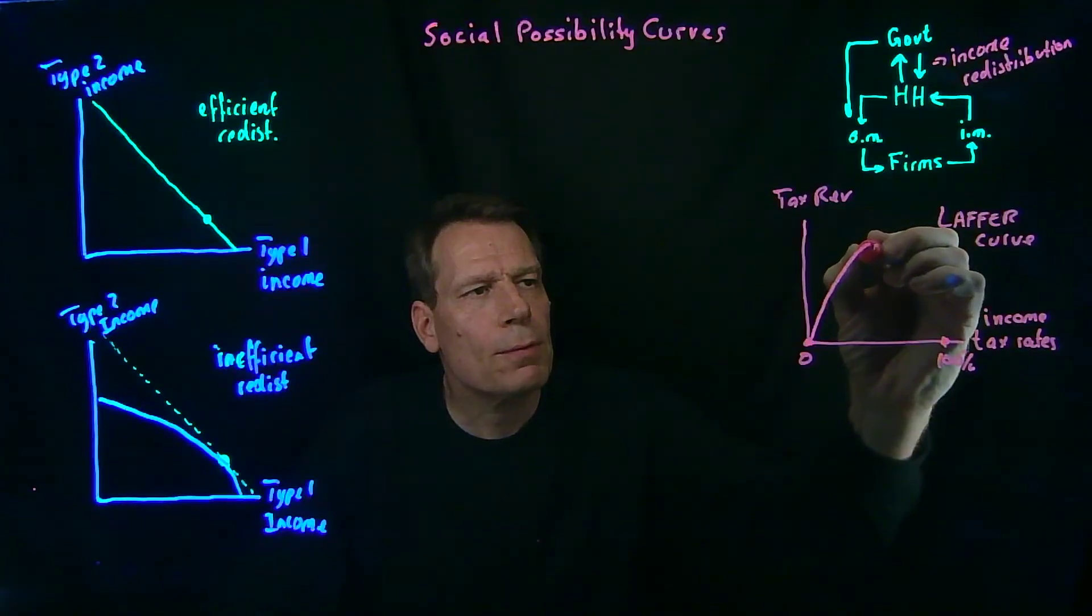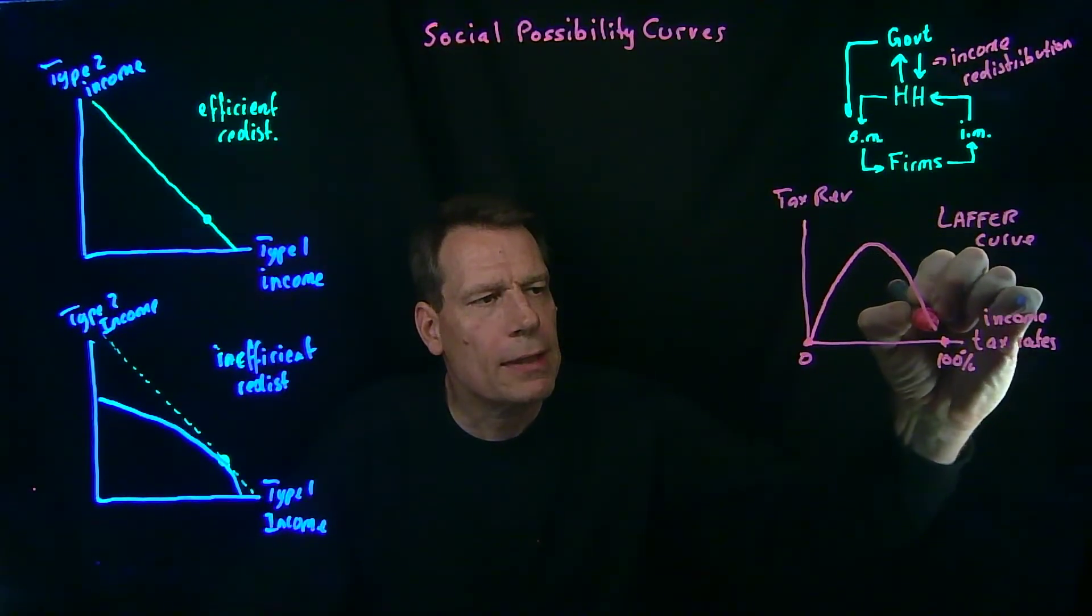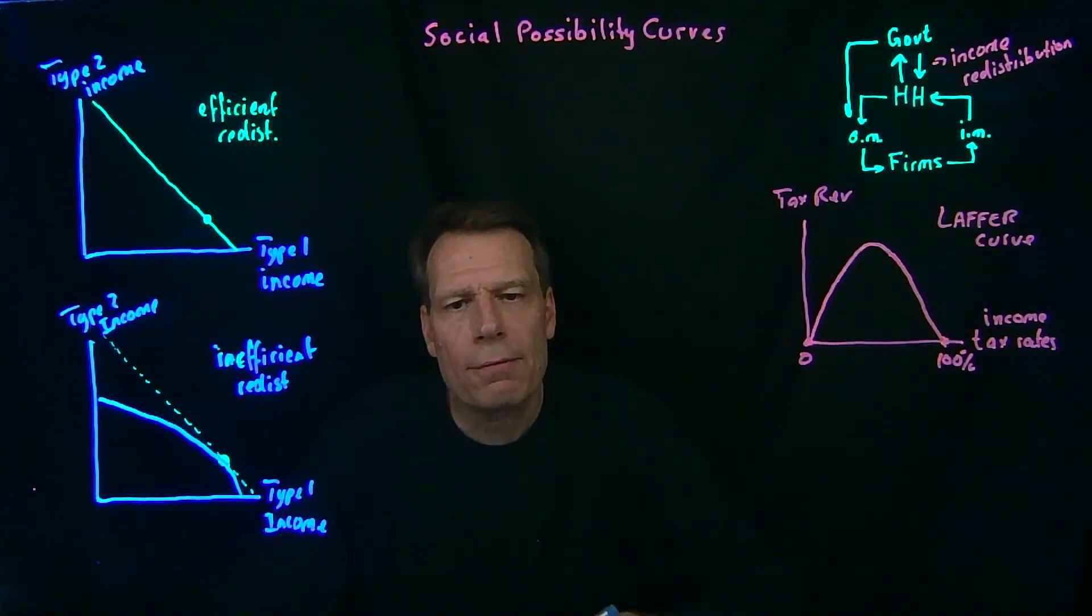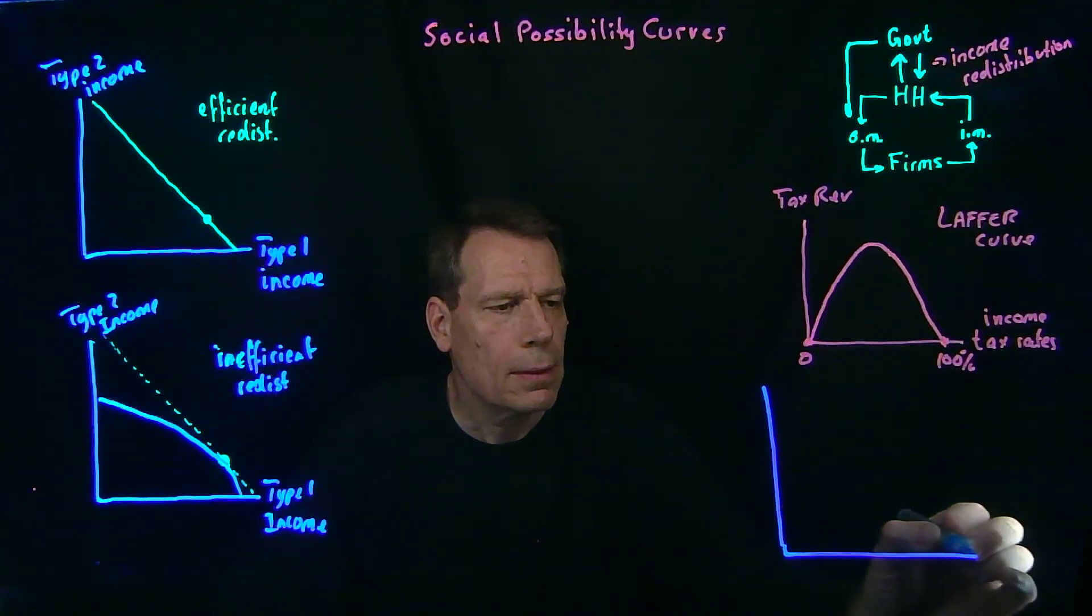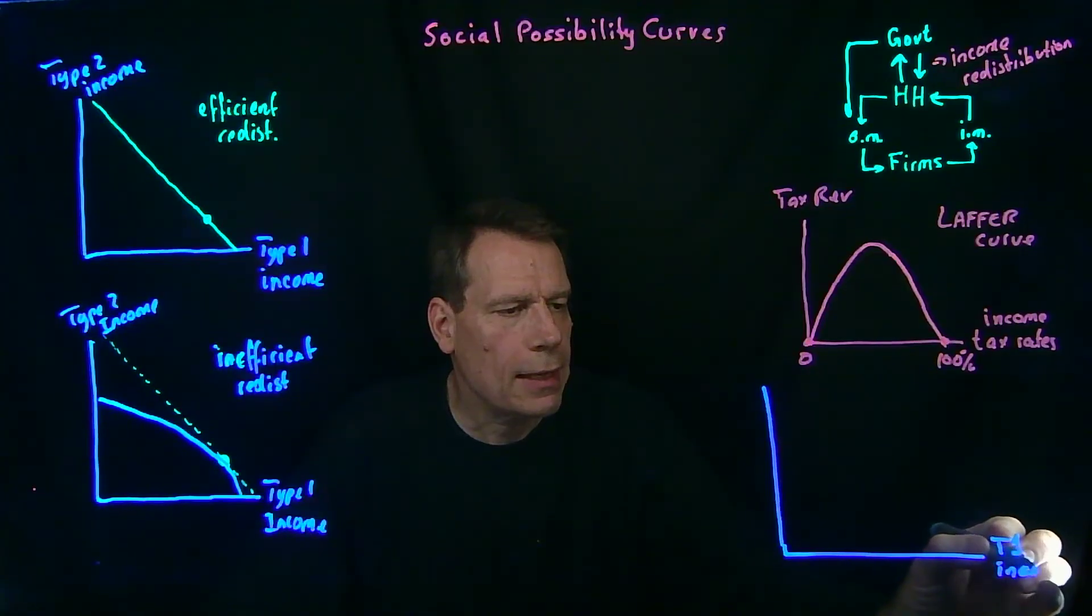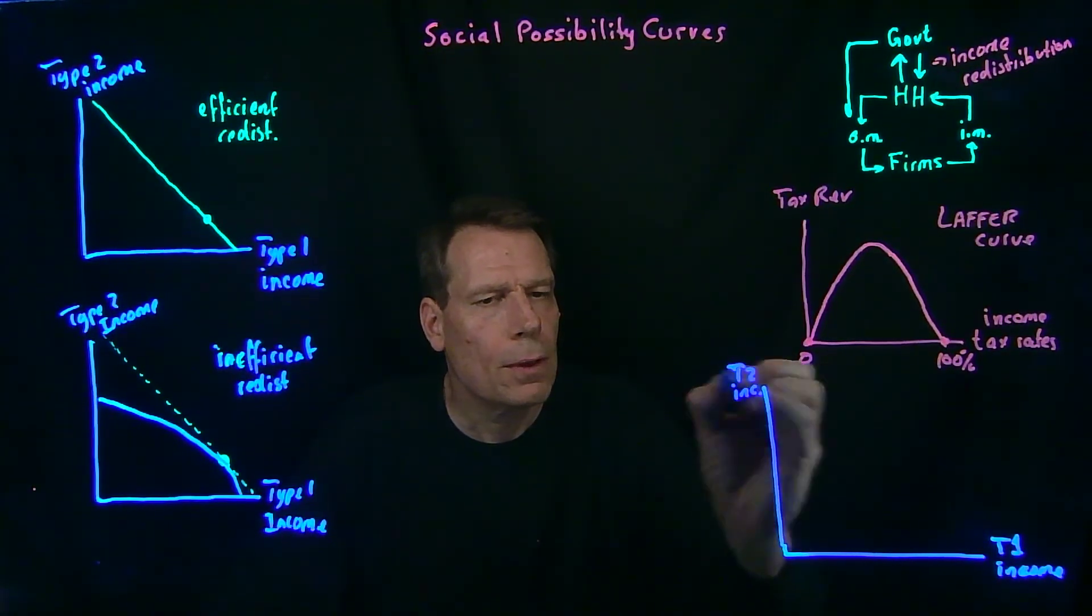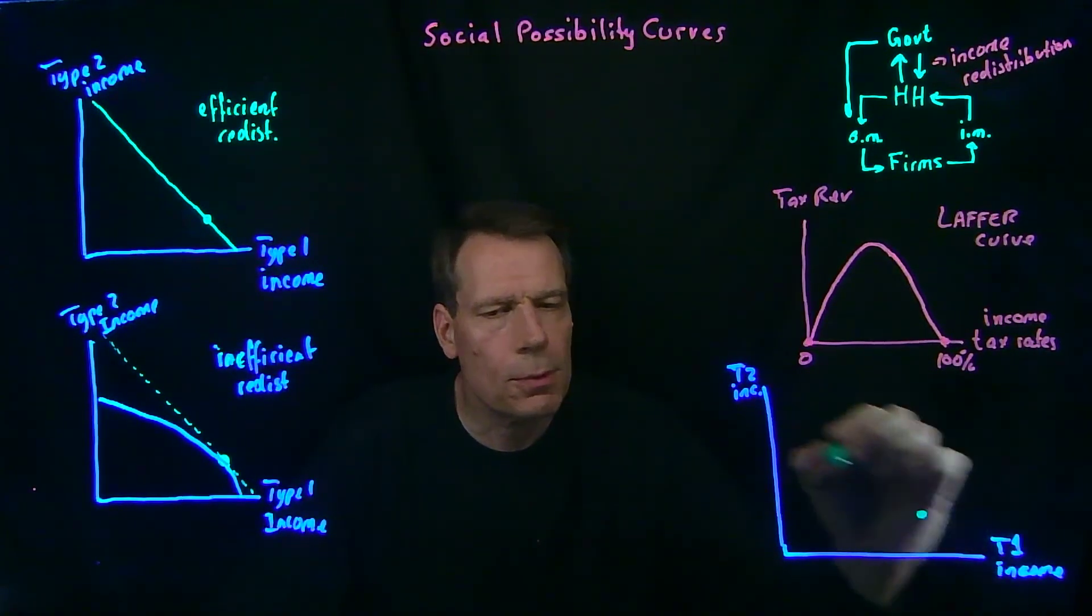So at some point we're going to reach a peak, and if we raise tax rates any more after that point, tax revenues actually fall. So what would that imply for our social possibility curve? Again, we'll have type 1 income on the horizontal axis, type 2 income on the vertical axis, and we start with the point that the economy takes us to where we do no redistribution whatsoever.